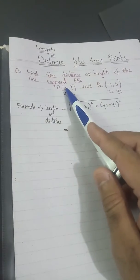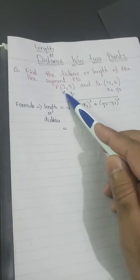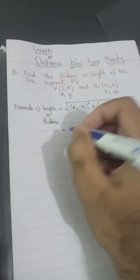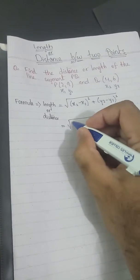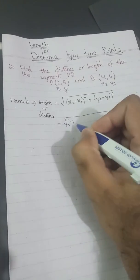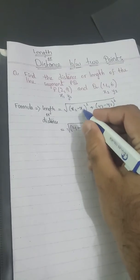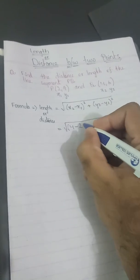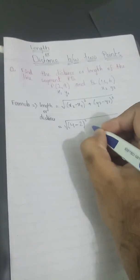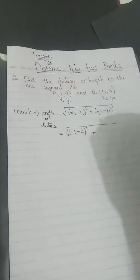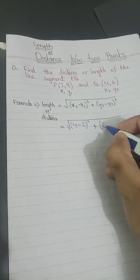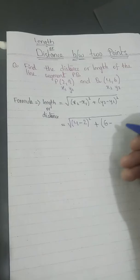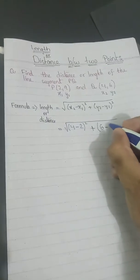Since I have labeled P as my first point, I have x1 and y1, and Q gives me x2 and y2. I will make a square root sign first. The value of x2 is 4, so I make a small bracket and write 4 inside, then a negative sign, and x1 is 2, then close the bracket and write a square on it. Then a plus sign, another small bracket with y2 as 6, a negative sign, and y1 as 9, close the bracket and put a square on it.